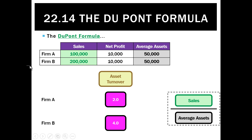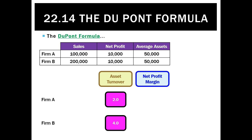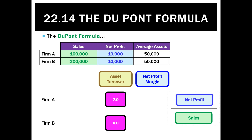A good analogy here is the difference between Myer and the Reject Shop. Myer doesn't have to sell as much stock as the Reject Shop in order to survive, whereas the Reject Shop has to sell a lot of goods. The reason they're very different is because of the net profit margin — calculated as net profit divided by sales. For Firm A that's 10,000 divided by 100,000, which is 10%, and for Firm B it's 10,000 divided by 200,000, which is 5%.